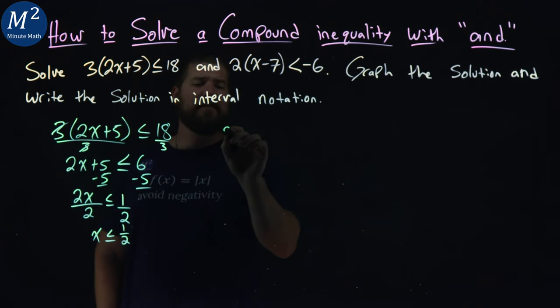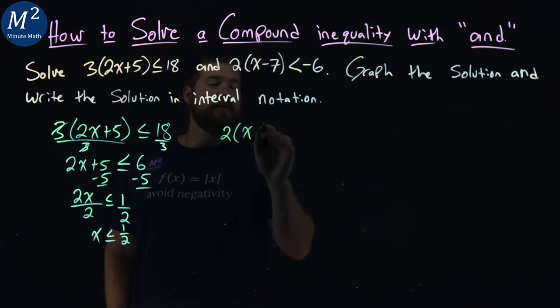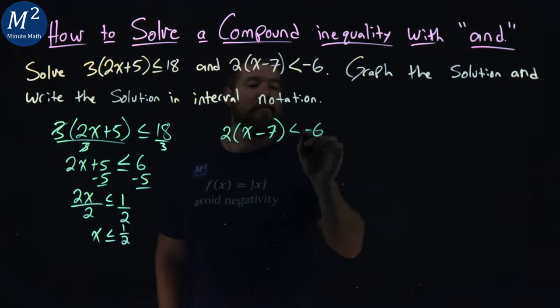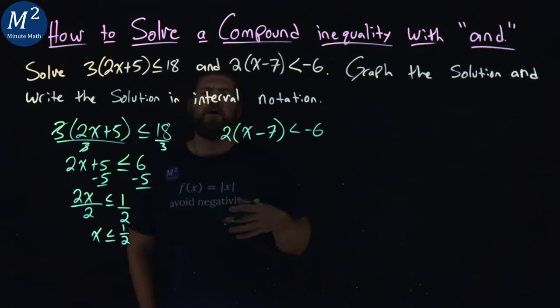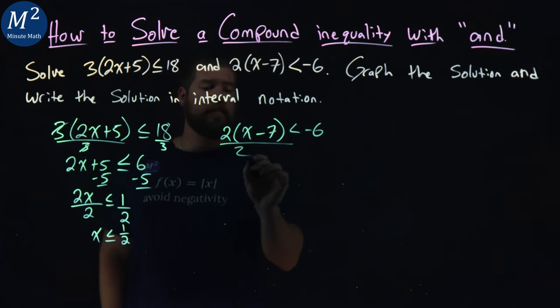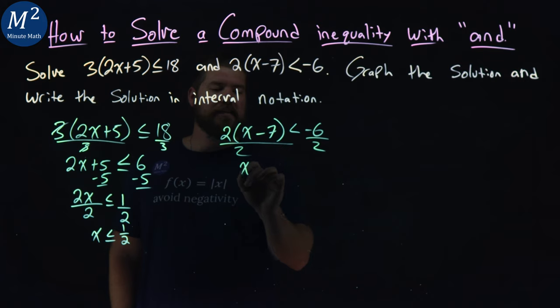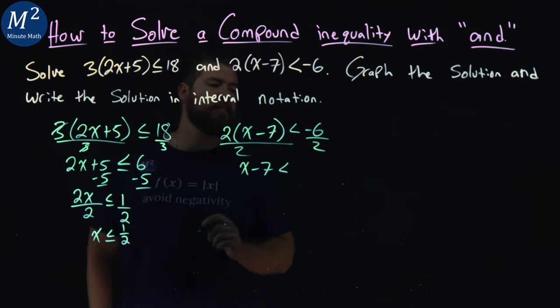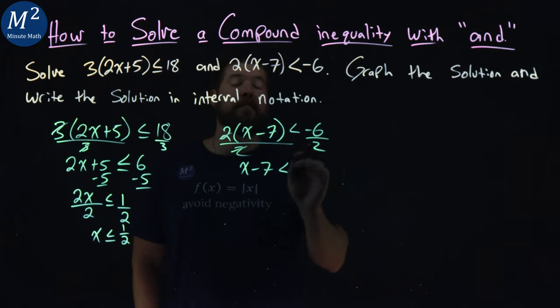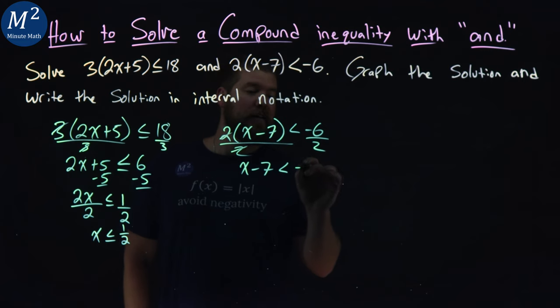2(x-7) is less than -6. Now what I want to do here, again same thing, divide both sides by 2, and I have x-7 is less than, 2's cancel here, -6 divided by 2 is -3.